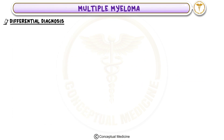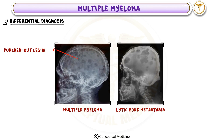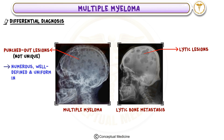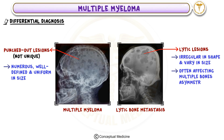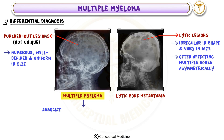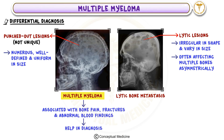Differential Diagnosis: It's important to remember that punched-out lesions are not unique to multiple myeloma. Another condition showing similar lytic lesions is lytic bone metastasis. In multiple myeloma, the lesions are numerous, well-defined, and uniform in size. In lytic metastasis, the lesions are irregular in shape and vary in size, often affecting multiple bones asymmetrically. Additionally, multiple myeloma is often associated with bone pain, fractures, and abnormal blood findings, which help in diagnosis.